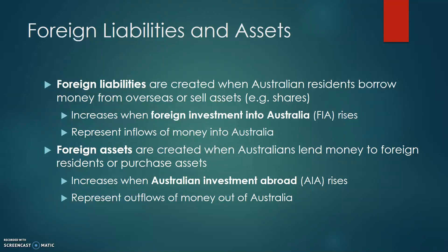There are large differences between foreign liabilities and foreign assets. Foreign liabilities are built up when money flows into Australia, while foreign assets are built up as money flows out of Australia. The key thing to highlight is that foreign liabilities and foreign assets represent a stock, or an accumulated level of liabilities or assets over time.